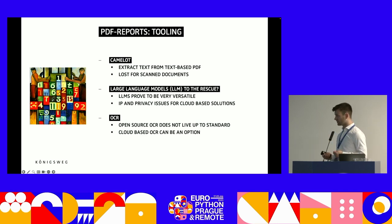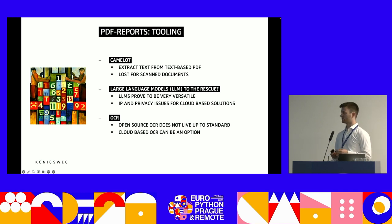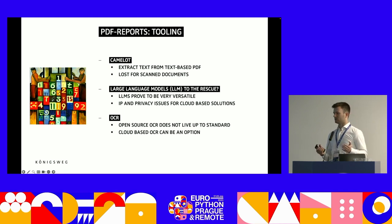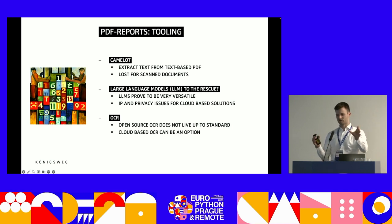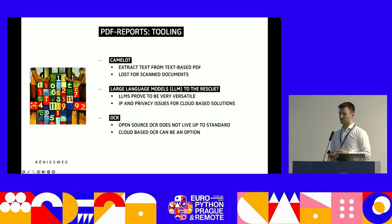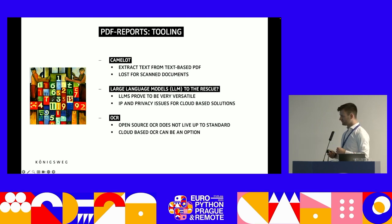With the recent advent of large language models, maybe there will be a change in how we do this. For example, combining a strong visual model with a large language model could allow handling even ill-structured formats like PDFs. For OCR-based PDFs it's even more difficult, and I don't think it's feasible at the moment.